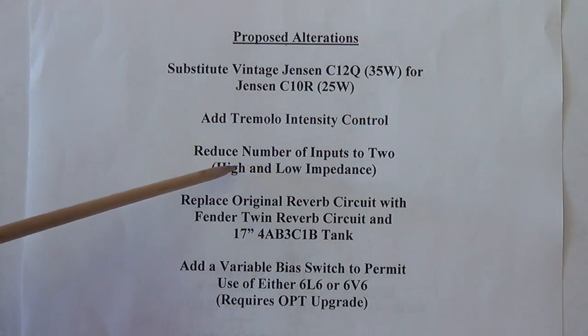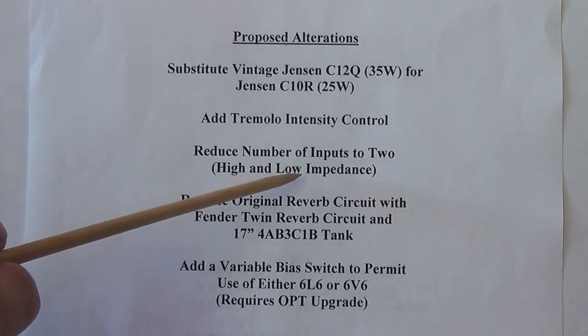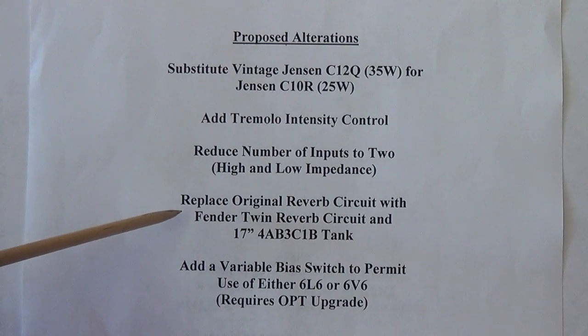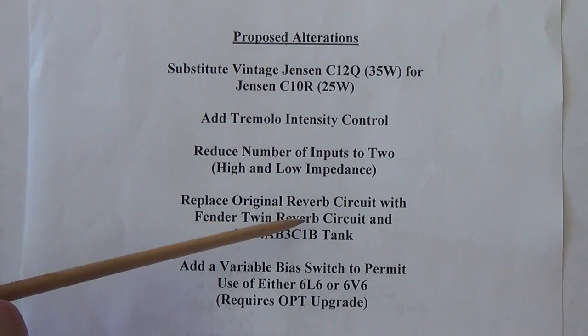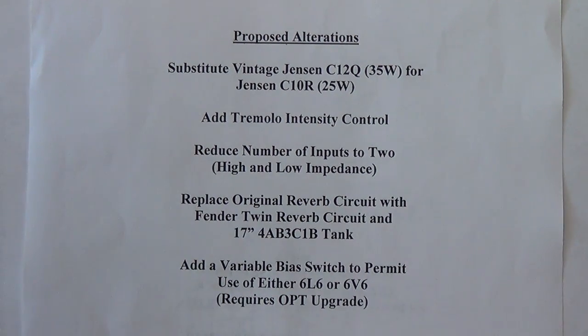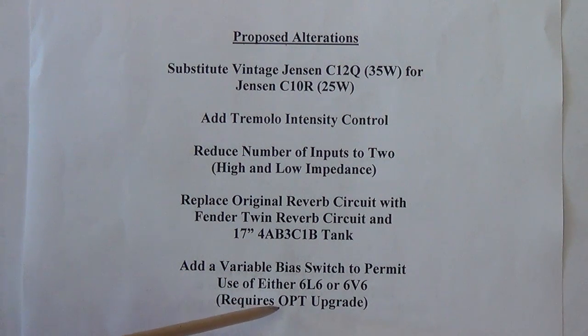Next I'll reduce the number of inputs to two, say high and low impedance and get rid of that treble input. Number four I'm going to replace the original reverb circuit with a complete Fender Twin Reverb circuit with a 17 inch tank and finally I'm going to add a variable bias switch to permit the use of either a 6L6 or a 6V6 as the output tube and I feel that this is going to require some sort of output transformer upgrade with a greater than five watt capability.